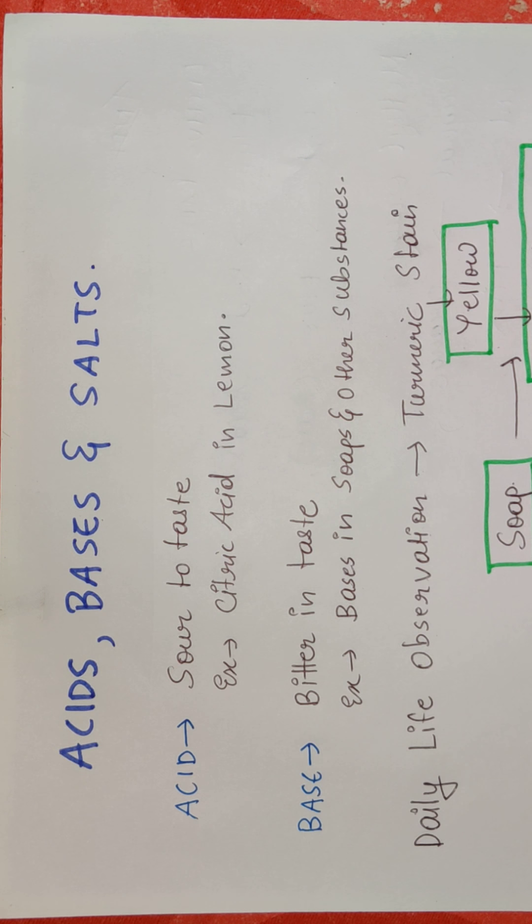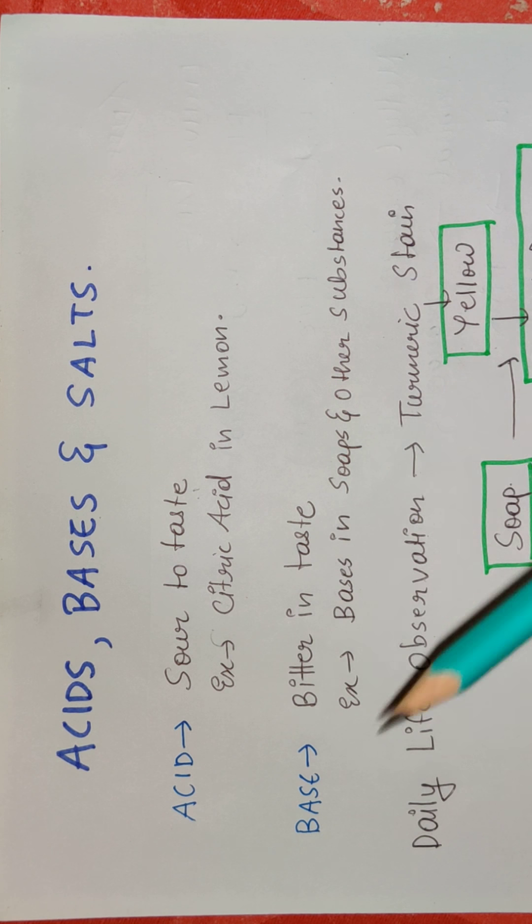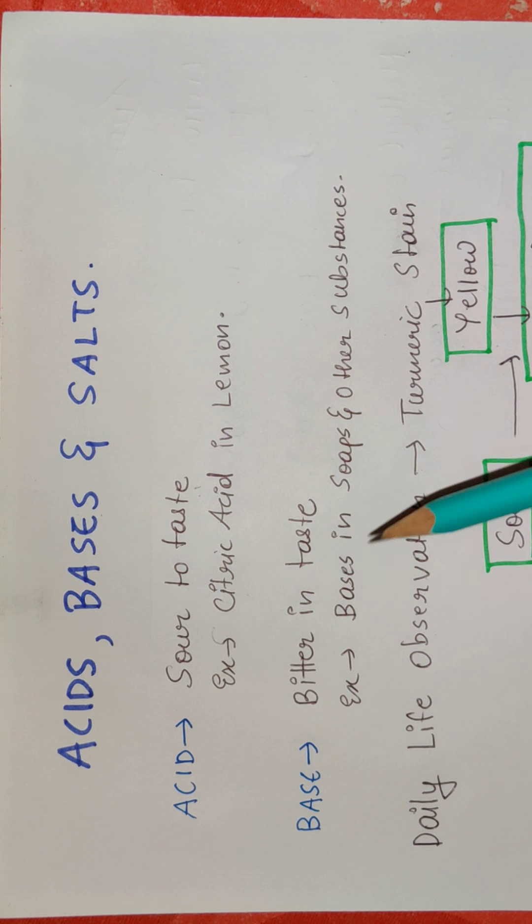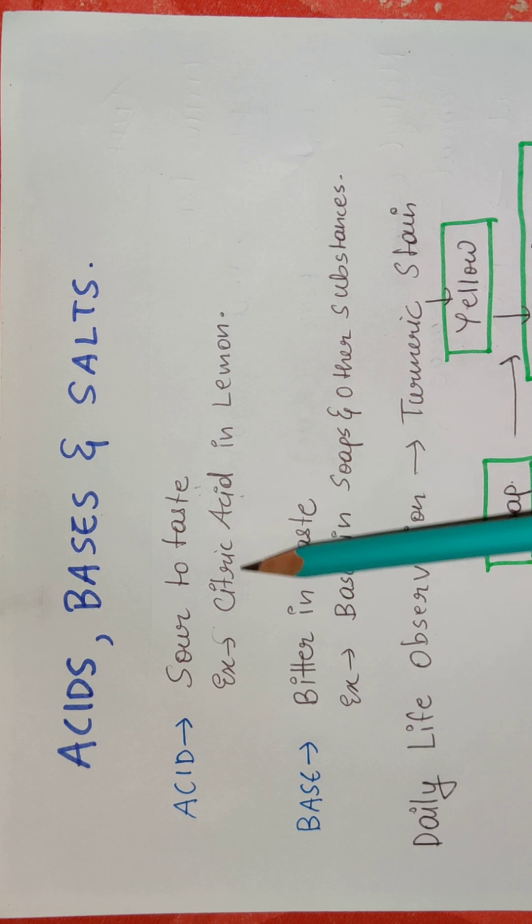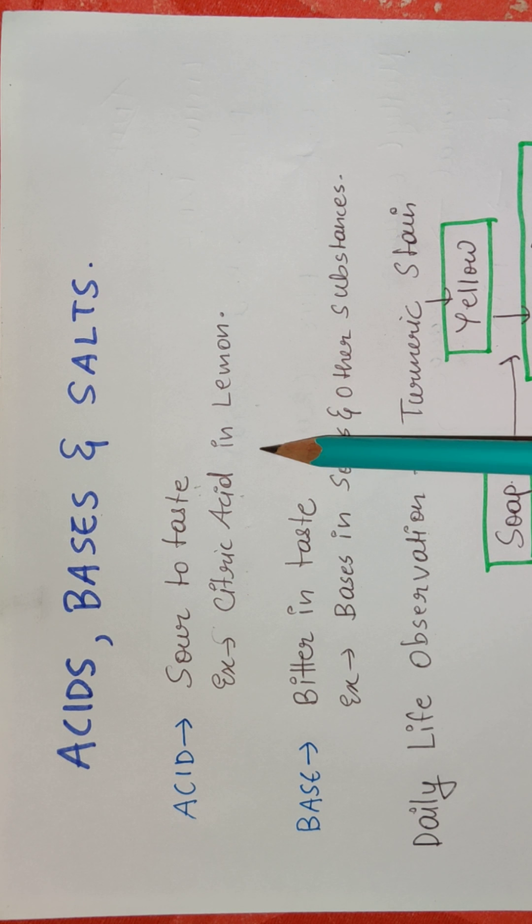If we take an example of normal daily life, acid is a substance which is sour to taste. Like we can talk about lemon. Lemon is a fruit which comes under the category of citrus fruit because it has citric acid present. And because of citric acid, our lemon has a sour taste.